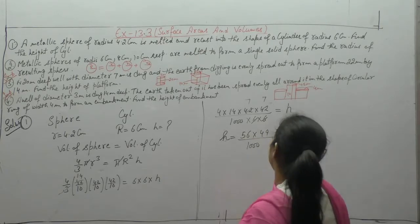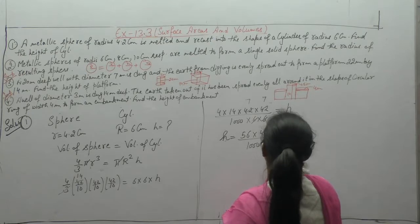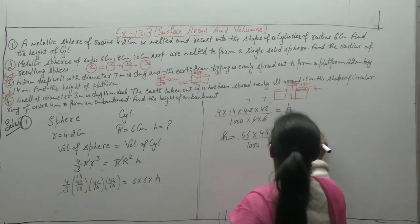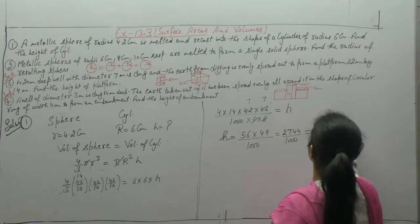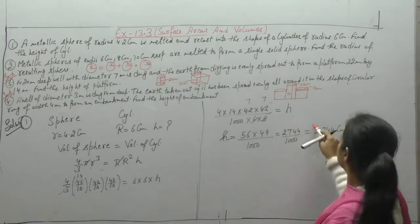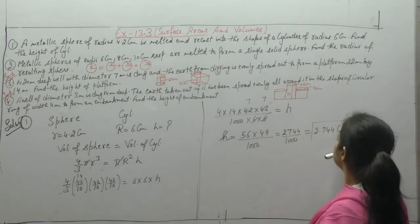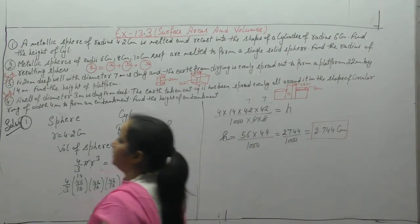Multiply these values: 7 × 7 = 49, 4 × 14 = 56, giving 2744 upon 1000. That is 2.744 centimeter. So the height of the cylinder is 2.744 centimeter.